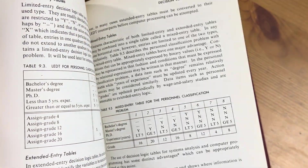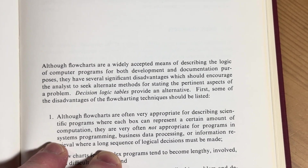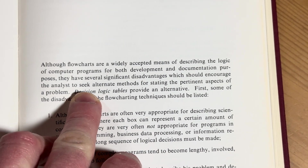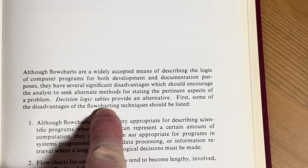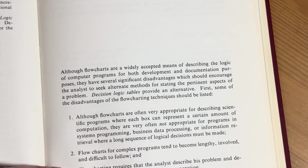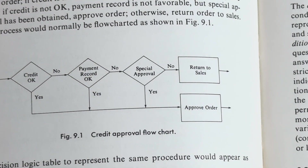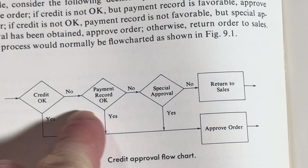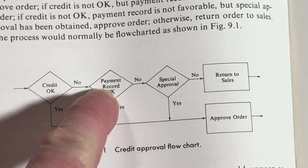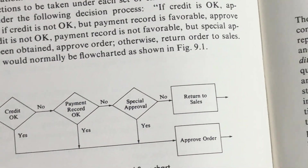Decision logic tables. Although flowcharts are a widely accepted means of describing the logic of computer programs for both development and documentation purposes, they have several significant disadvantages which should encourage the analyst to seek alternate methods for stating the pertinent aspects of a problem. Decision logic tables provide an alternative. So here's a flowchart. Credit — okay. No payment record, no special approval, no return to sales. Credit — yes. Credit not okay. No payment record. So many ways to get approved, right? You have to fail several times in order to not get approved according to this flowchart.